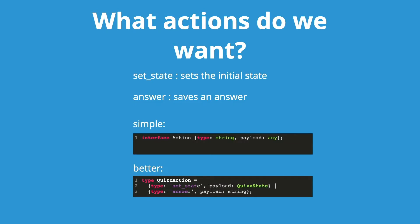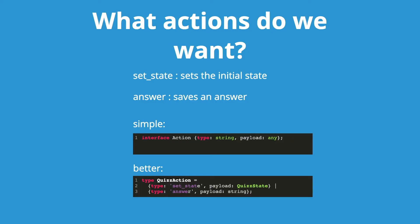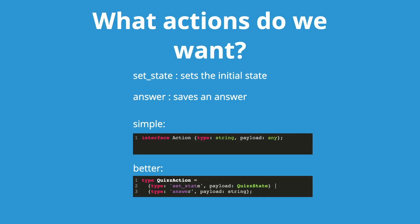We can create an action type which is the union of two types specific to each action. Here we have the quiz action, which is the union between an action set state — whose payload is a quiz state — and an action of type answer, whose payload is a string. This allows our IDE to determine if we are correctly defining the type of our payload.